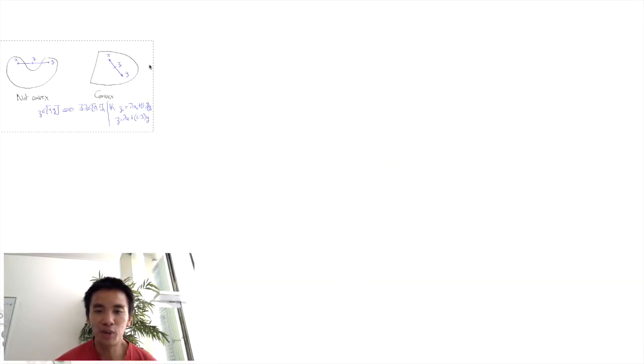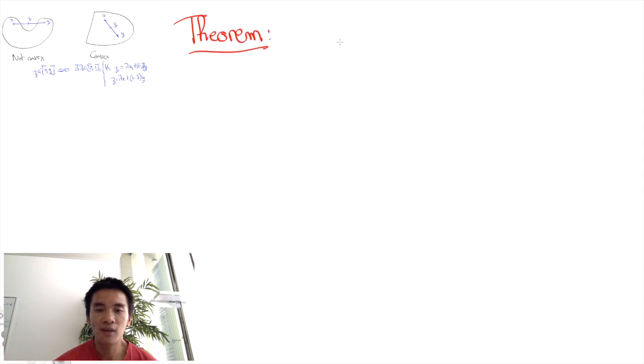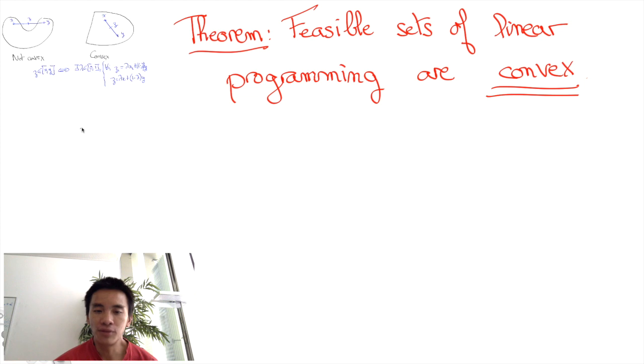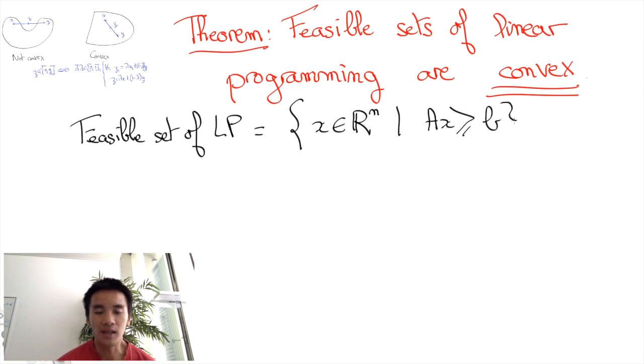An important theorem of linear programming and its geometry is that the feasible set of linear programming is convex. Before proving this theorem, let's recall that any feasible set of linear programming can be written as a set P of points in R^n such that AX is greater or equal to B, where A is some matrix M by N and B is some vector of real numbers.